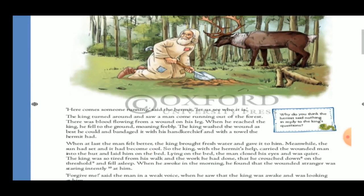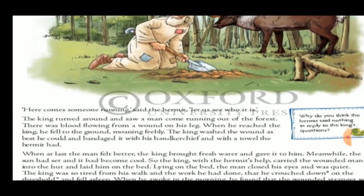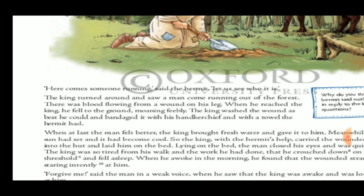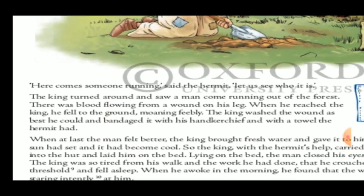'Here comes someone running,' said the hermit. 'Let us see who it is.' The king turned around and saw a man running out of the forest with blood flowing from a wound on his leg. When that person reached them, he fell to the ground moaning feebly.